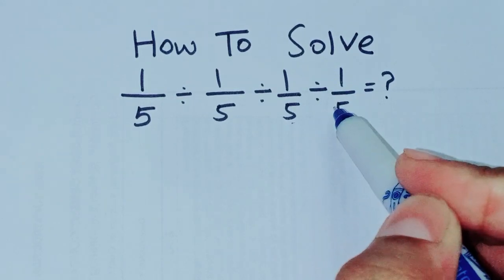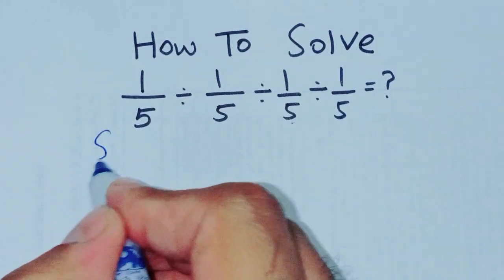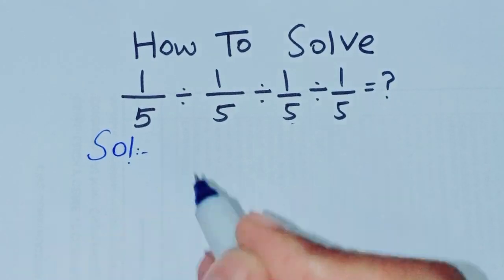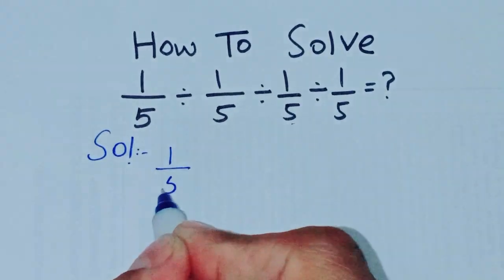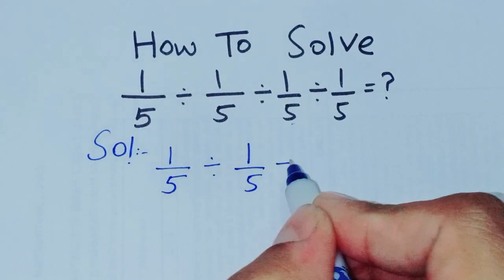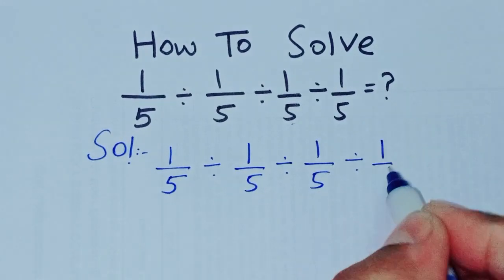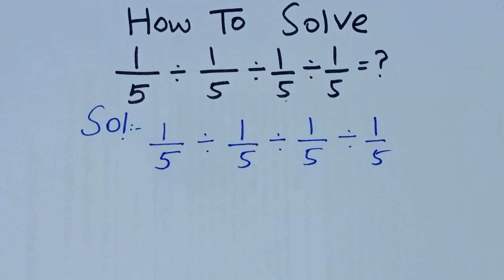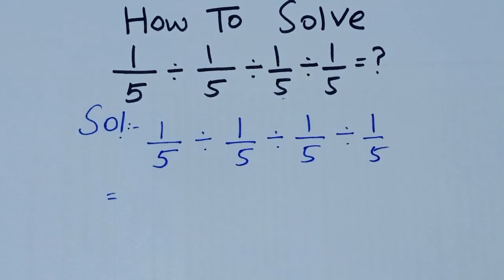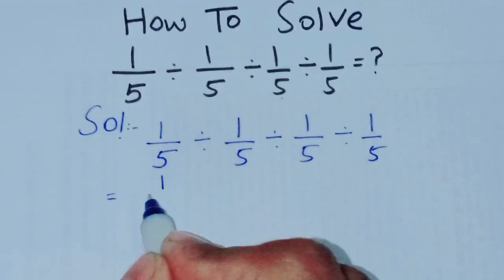So let's start. The solution is 1/5 ÷ 1/5 ÷ 1/5 ÷ 1/5. We know that divide changes into multiply. First of all, 1/5 divided changes to multiply, so 5/1.